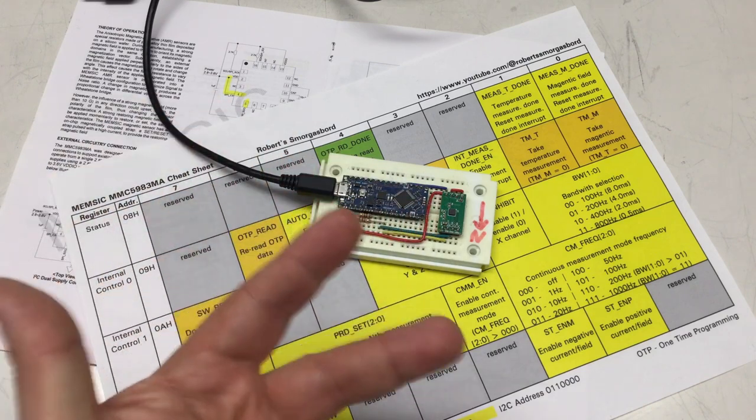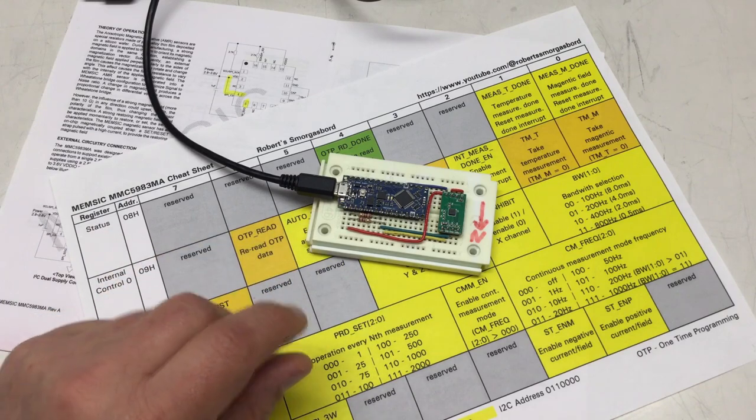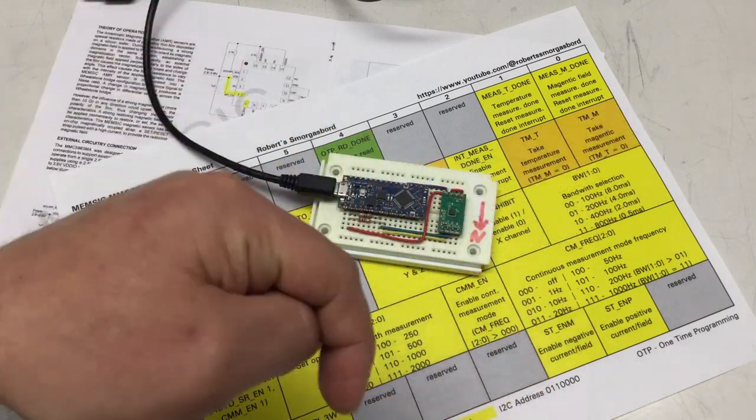And we also had a look at its status register, which is meager three meaningful bits. Cards here, link in the description.